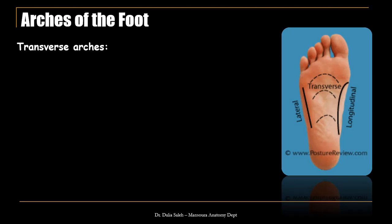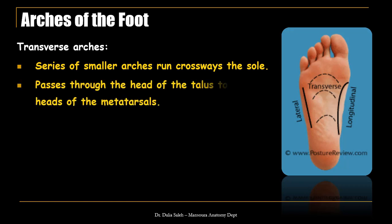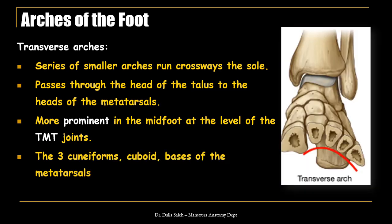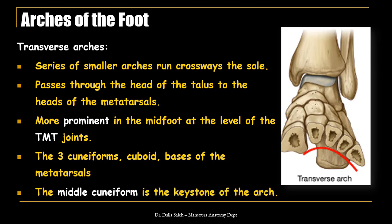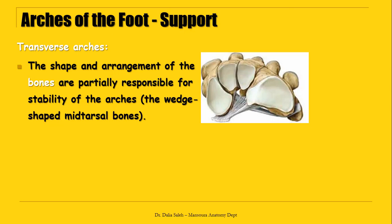The second type of arches in the foot are the transverse arches — a series of smaller arches that run crossways the sole, passing through the head of the talus to the heads of the metatarsals. The most prominent one is in the midfoot at the level of the tarsometatarsal joints, made by the three cuneiforms, the cuboid, and the bases of the metatarsals. The middle cuneiform is considered the keystone for this arch. The shape and arrangement of the bones are partially responsible for stability because of the wedge shape of the mid-tarsal bones.